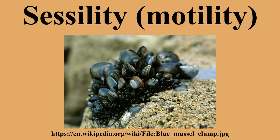Sessile organisms can move through outside sources but are usually permanently attached to something. Organisms such as corals lay down their own substrate from which they grow. Other organisms grow from a solid such as a rock, dead tree trunk, or a man-made object such as a buoy or ship's hull.